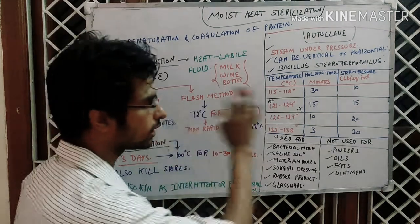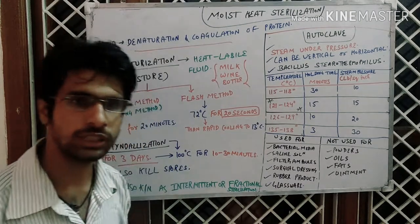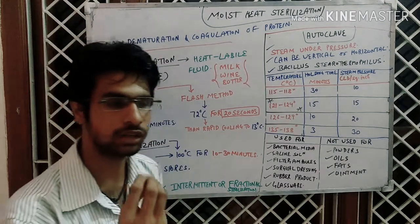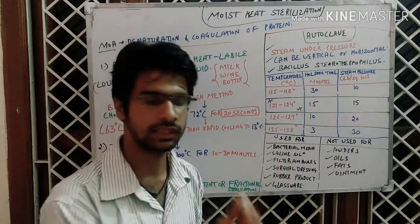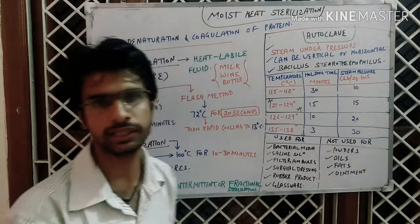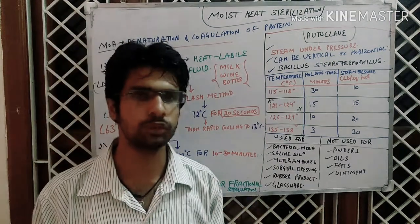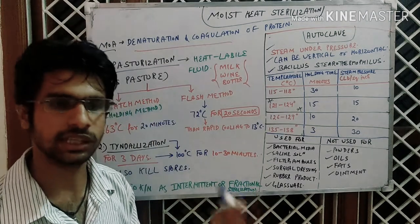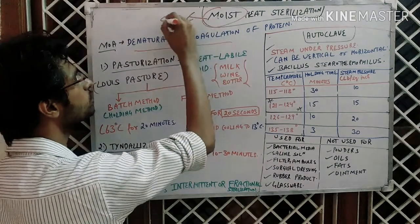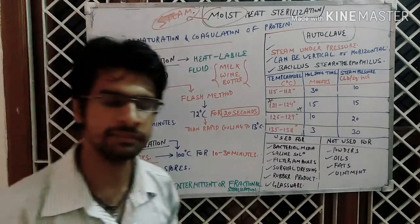The mechanism of action is: denaturation and coagulation of the protein. Coagulation means when something associates at a place and makes a complex — just like the coagulation of blood. When bleeding occurs, after two to eight minutes the clotting occurs. So simply it is the coagulation of the protein. This happens because proteins are not stable at that temperature, and the term 'moist' refers to the use of steam.